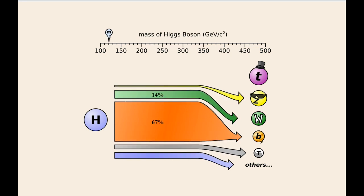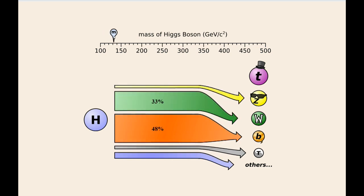As I move the slider bar to a mass of about 130, we see that the Higgs boson will decay into bottom quarks and W bosons with similar probability, and now there is some chance for it to decay into Z bosons.